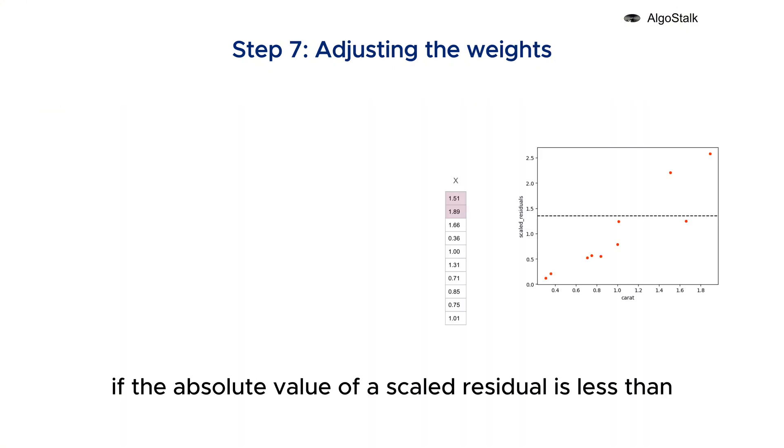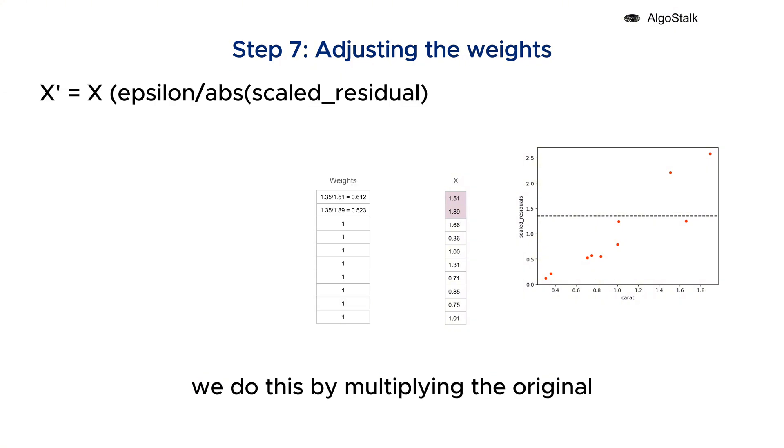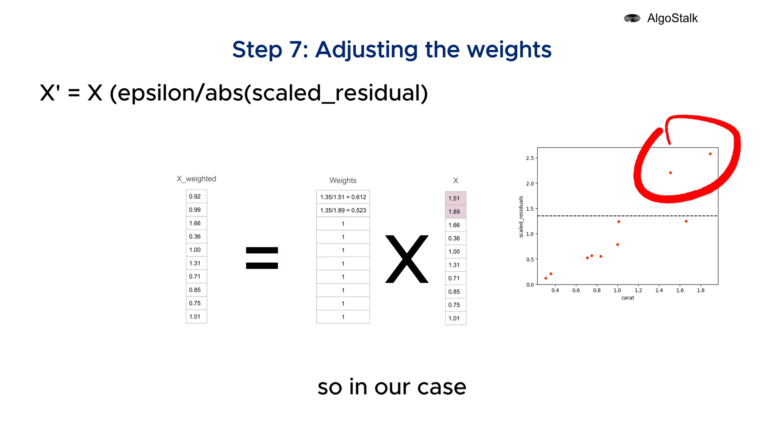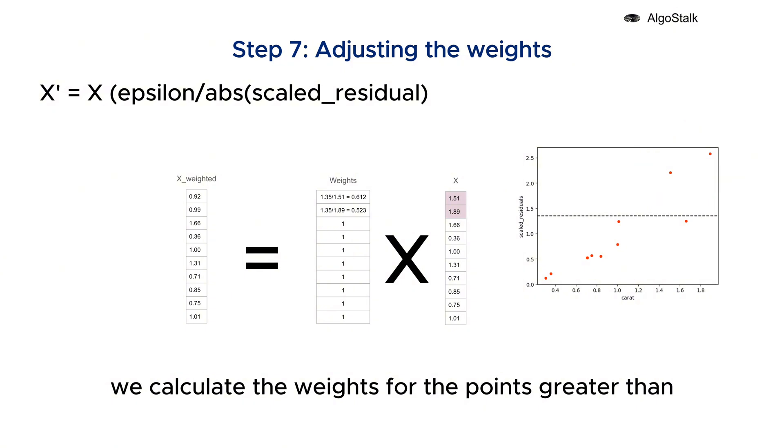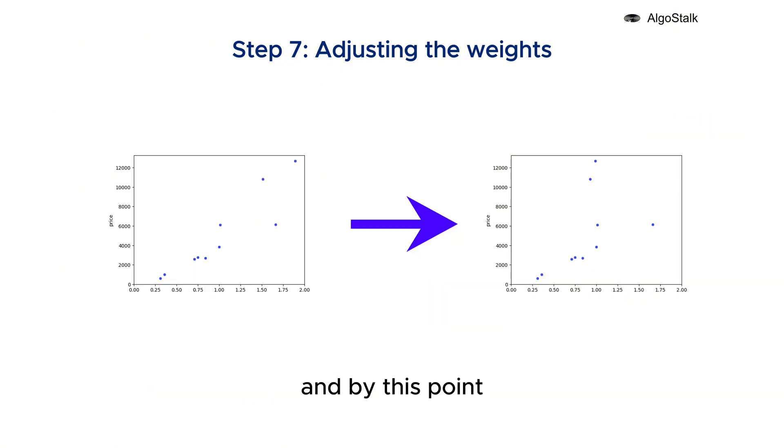Step seven: adjusting the weights. If the absolute value of a scaled residual is less than or equal to epsilon, the weight is set to 1, meaning this residual will be fully trusted, treated normally like in standard linear regression. But if the absolute value of the scaled residual is greater than epsilon, we need to scale down their weight. That means changing the value of carat for these data points. We do this by multiplying the original value with the ratio of epsilon and absolute value of the scaled residual. So in our case, we calculate the weights for the points greater than epsilon, and by this point Huber has changed the graph by replacing x or carat value to the x weighted.